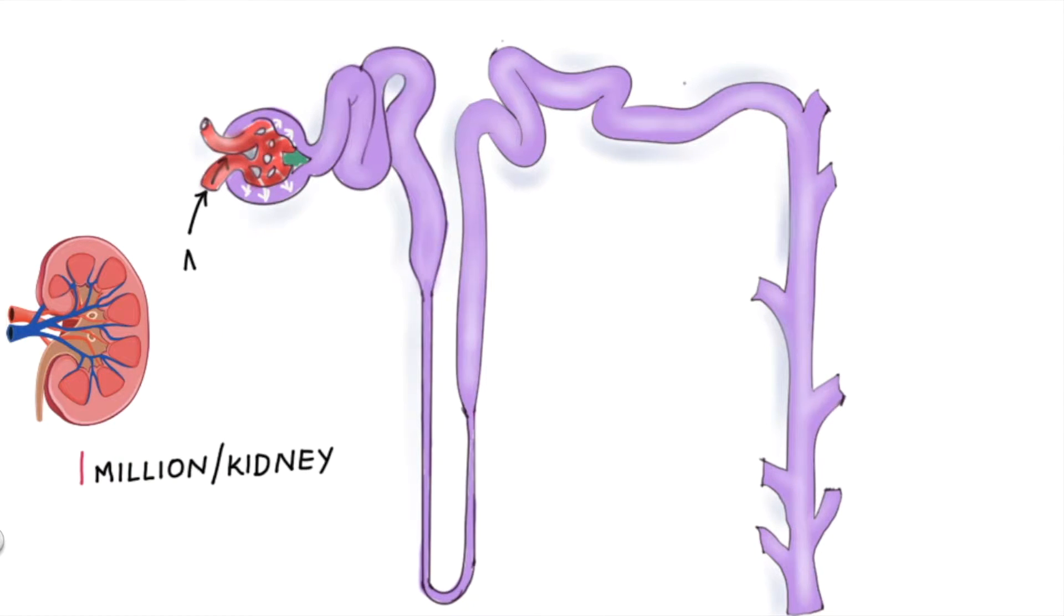At this end of the nephron, blood enters via afferent arterial and passed through a network of capillaries called glomerulus and leaves via the efferent arterial. As this occurs,